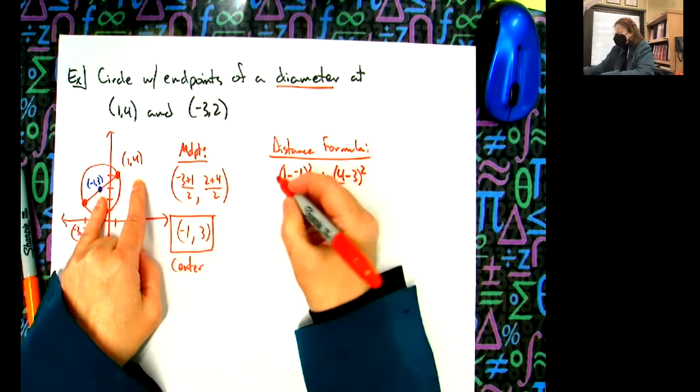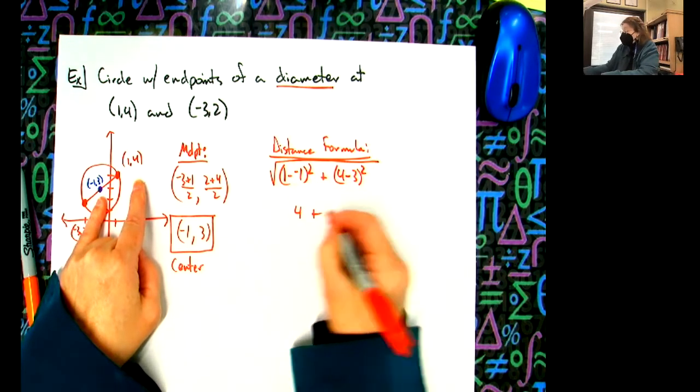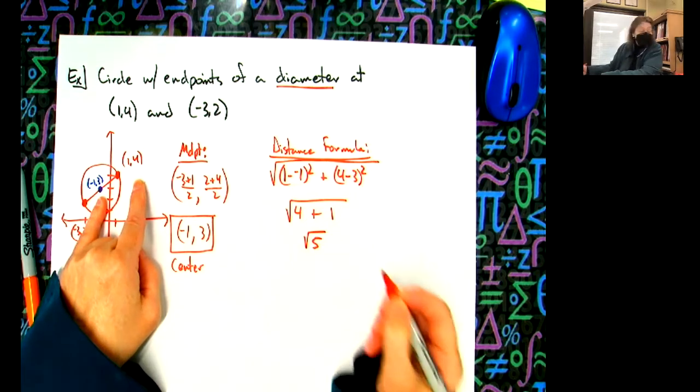I always hate the distance formula. That's going to be a 4, 1^2 is 1, so square root of 5.